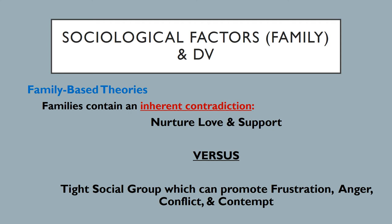Moving on to the second area — family-based theories in general — no one specific theory, but a recap of a few components from theoretical perspectives in this area. One of the most important things is what we see where it says families contain an inherent contradiction, and almost every one of us can think back and remember some sort of conflict within our own family that speaks to this.